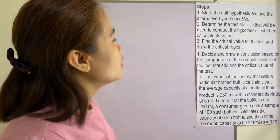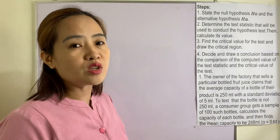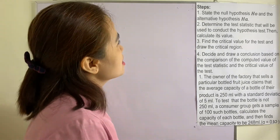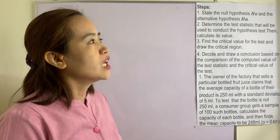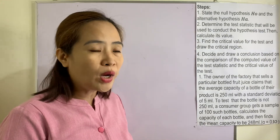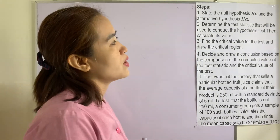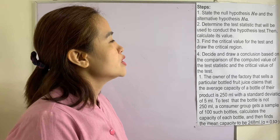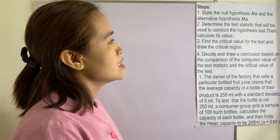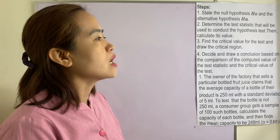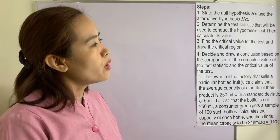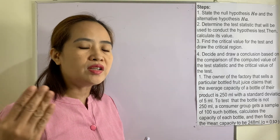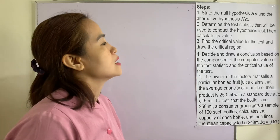We have four steps in solving problems involving tests of hypothesis. The first one is: state the null hypothesis H sub O and the alternative hypothesis H sub A. Number two, determine the test statistic that will be used to conduct that hypothesis test, then calculate its value. You may use here the Z and the T formulas.